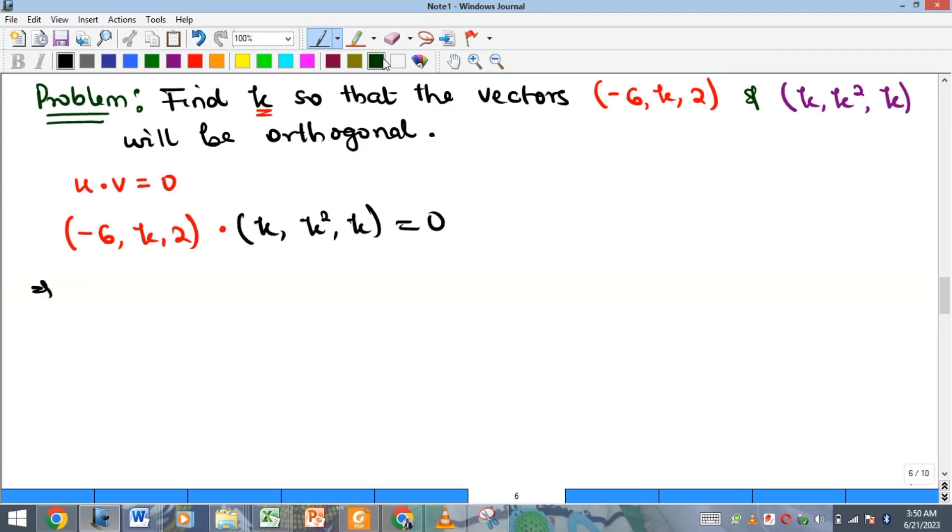The components will multiply, so we have minus 6 times k, that's minus 6 multiplying this k here, and then the second components k and k squared will multiply to give us k cubed.